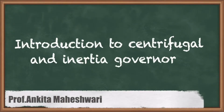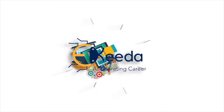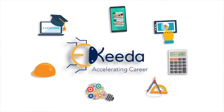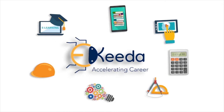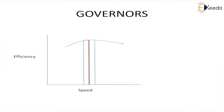In this video we will discuss centrifugal and inertia governors. Governors are basically speed-regulating devices and they control the speed whenever there is variation in load within the specified limits by controlling the flow of working fluid.